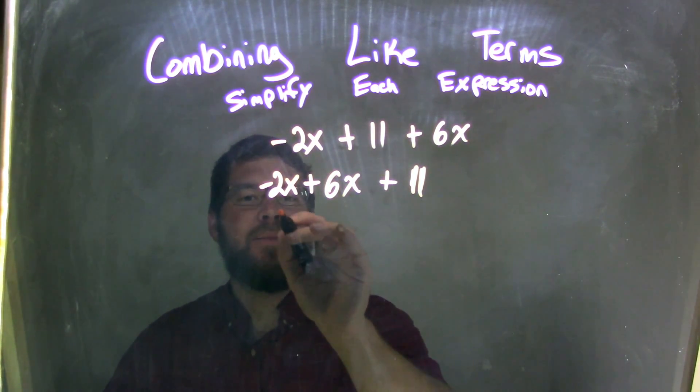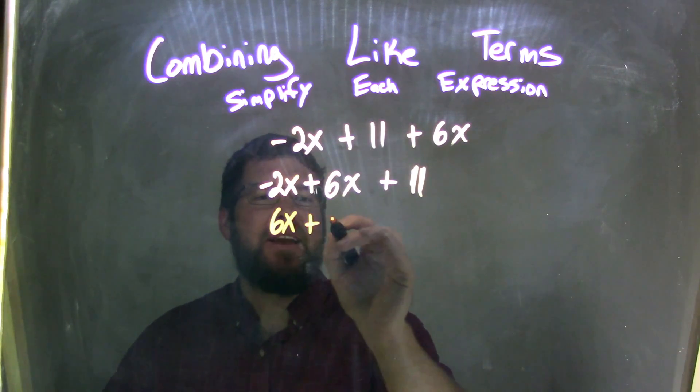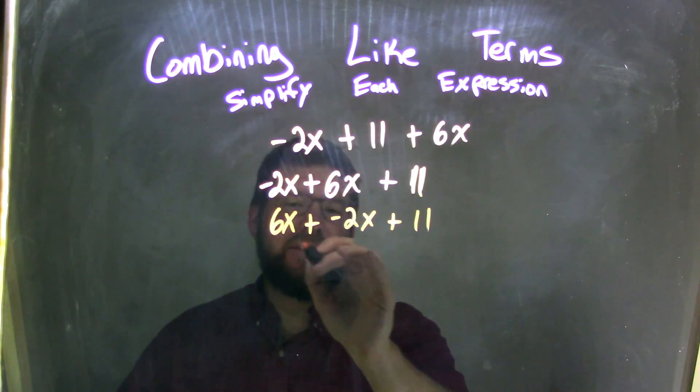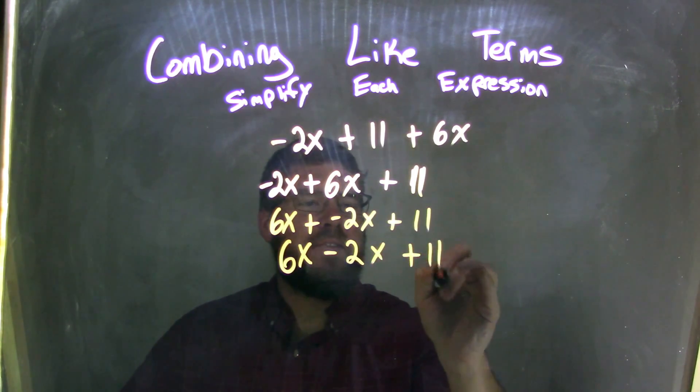I'm going to rearrange this to be 6x plus a negative 2x plus 11, and adding a negative is the same thing as subtraction, so 6x minus 2x plus 11.